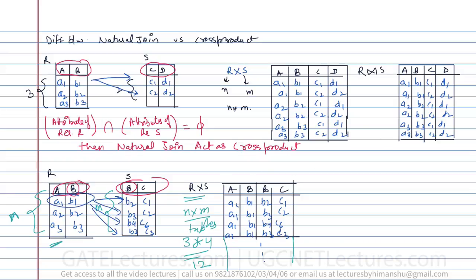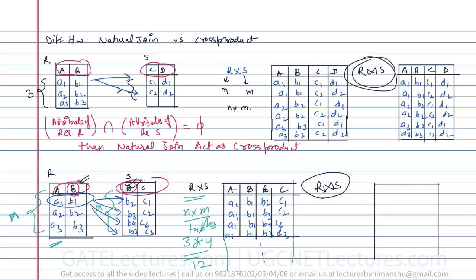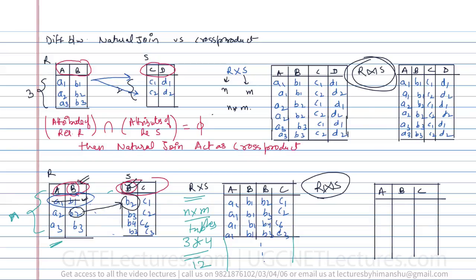With natural join it is different. Since B is a common attribute, it appears only once, giving three attributes: A, B, and C. We combine only those tuples where the B values match. B1 is in R but not in S, so that tuple is excluded. B2 appears in both, so we get (a2, b2, c1). B3 appears twice in S, so we get (a3,b3,c2) and (a3,b3,c3). The natural join produces only three tuples.